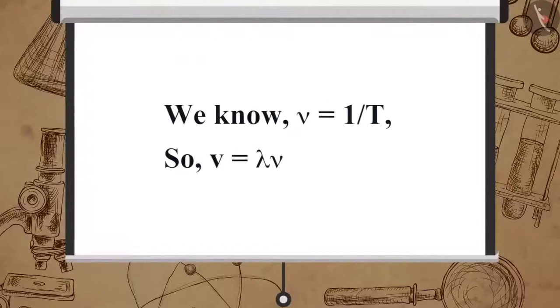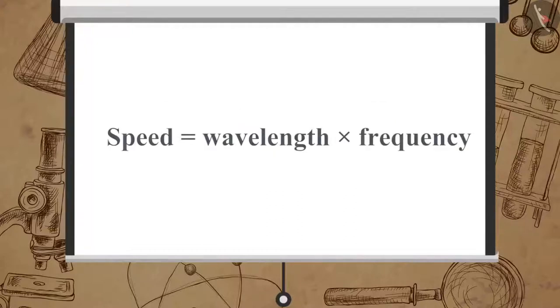We know nu is equal to 1 upon T. So, speed is equal to lambda multiplied by nu. Thus, speed is equal to wavelength multiplied by frequency.